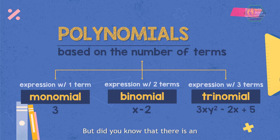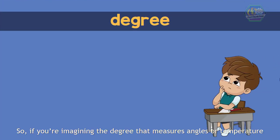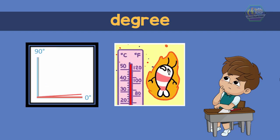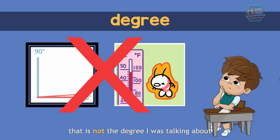That's what polynomials are all about. But did you know that there is an important property of terms and polynomials? And this is called the degree. If you're imagining the degree which measures angles or temperature, I'm sorry to disappoint you, but that's not the degree I was talking about.